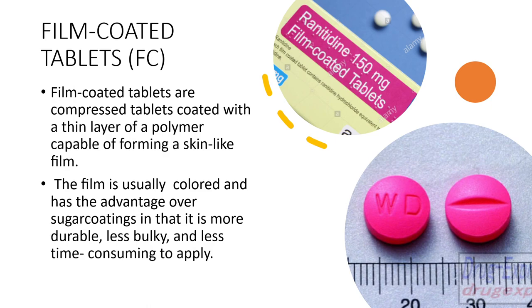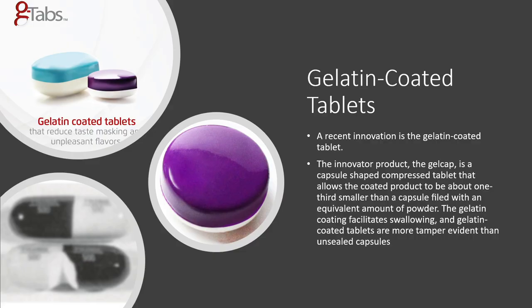However, in terms of function, film coated tablets act the same as sugar coated tablets. Next, you have your gelatin coated tablets, which are also similar to film coated and sugar coated tablets. The only difference is the coating material — in gelatin coated tablets, instead of using film or sugar, you dip the tablet in gelatin. One advantage of gelatin is it's cheap, it readily coats a tablet, and it makes it a little bit smoother to swallow.